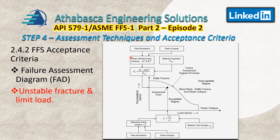The FAD involves complex equations. In an FFS analysis of crack flaws, results from the stress analysis — including stress intensification factors, load limit solutions, material strength, and material toughness — are all combined to calculate K and L. These two quantities represent coordinates on the two-dimensional FAD diagram to determine acceptability. If the assessment point falls below the FAD curve, the component is acceptable and you can continue with operation.